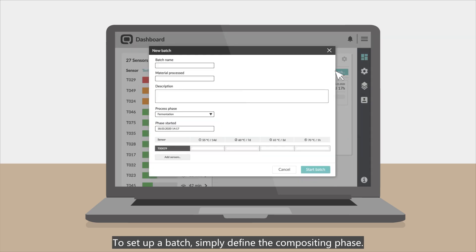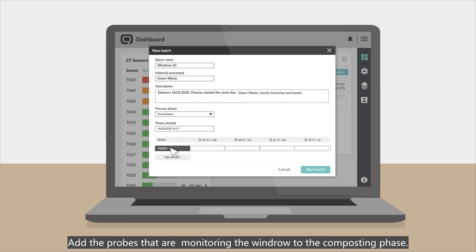To set up a batch, simply define the composting phase. Name your batch and add all necessary information about the biowaste. Add the probes that are monitoring the windrow to the composting phase.